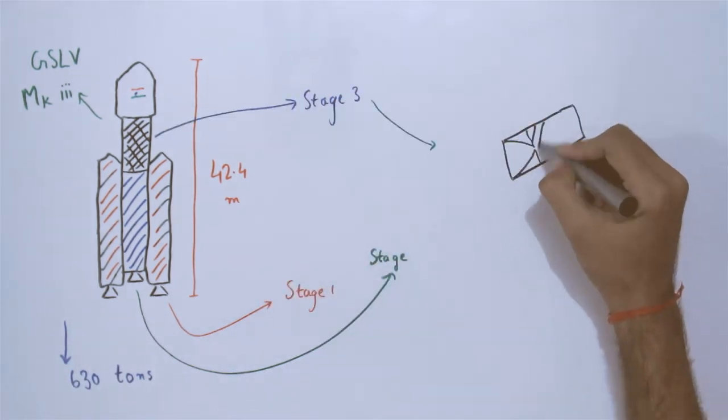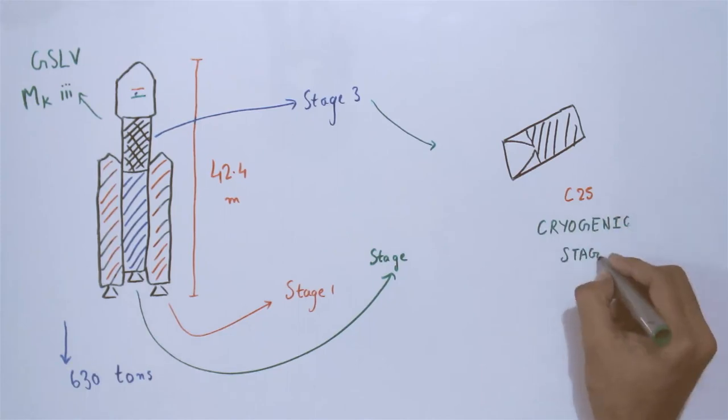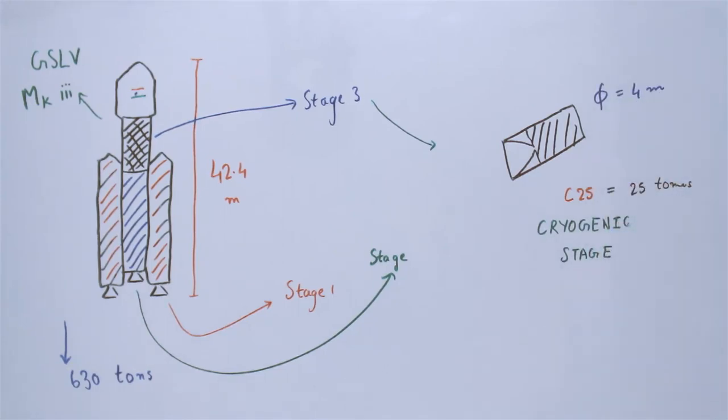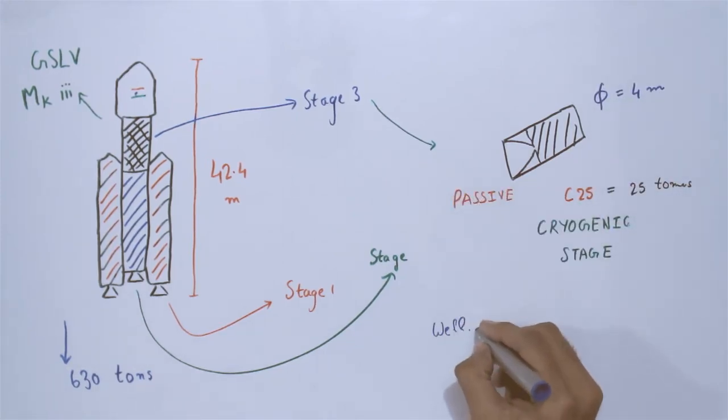Stage 3. The third stage is a C25 cryogenic engine. It shall become passive in this flight which means it shall not be ignited as the cryogenic engine is yet to be made ready in the next two years.